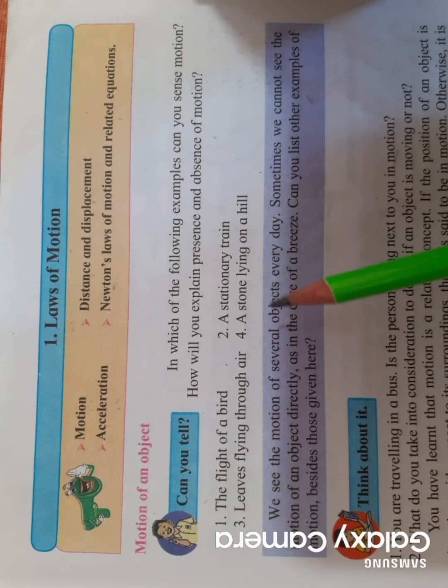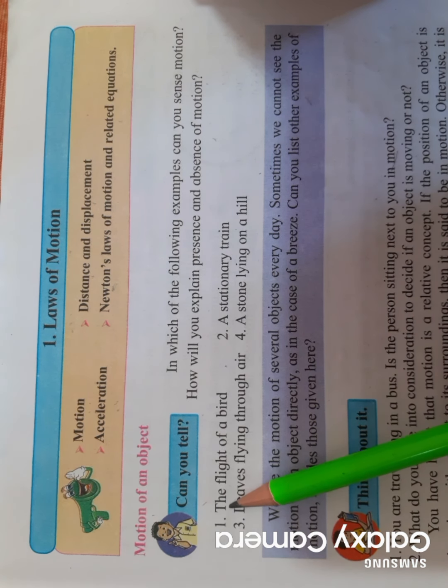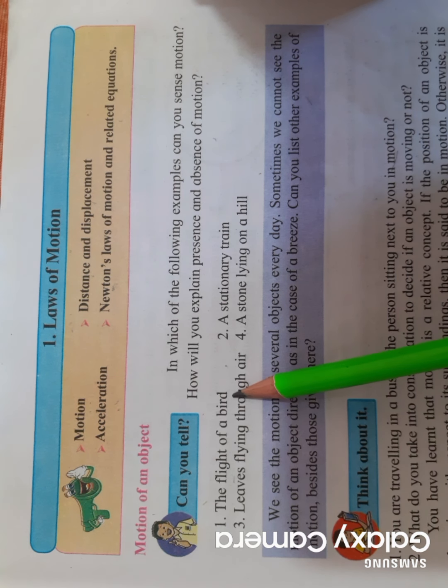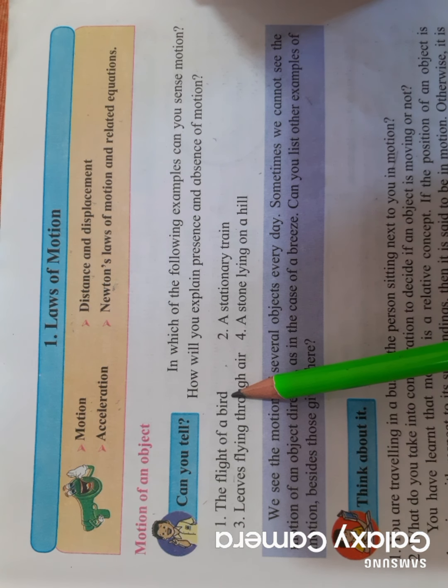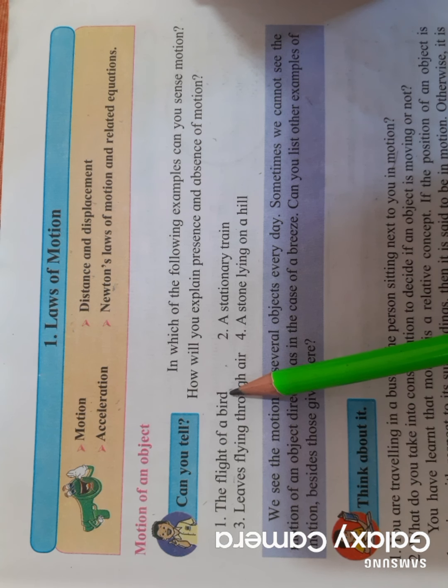Let us take an example. First example: a flight of a bird. A bird is taking flight, trying to fly. What will we say? Motion is there. Why? Because the bird is moving from one particular point to another particular point.